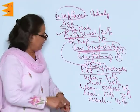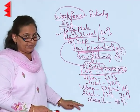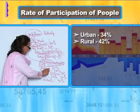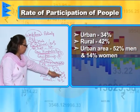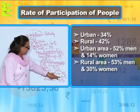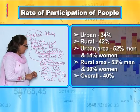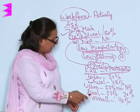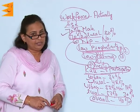Let us talk about the rate of participation of the workforce in India. In the urban areas it is 34% and in the rural areas it is 42%. In the urban areas, 52% of men and 14% of women give their participation, whereas in the rural areas it is 53% men and 30% women. The overall participation rate is 40%, which means the participation is very, very low.